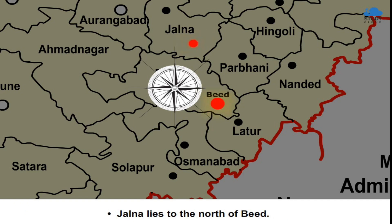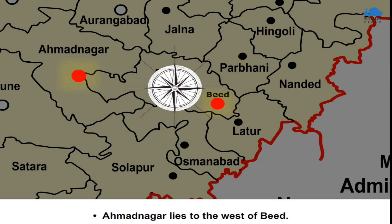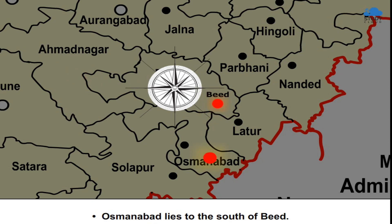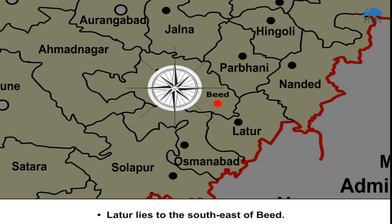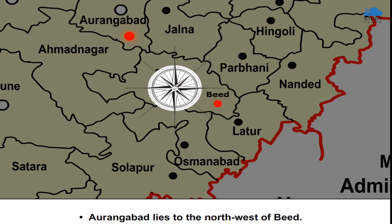Jalna lies to the north of Beed. Ahmednagar lies to the west of Beed. Osmanabad lies to the south of Beed. Latur lies to the south-east of Beed. Aurangabad lies to the north-west of Beed.